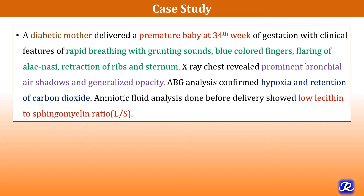A diabetic mother delivered a premature baby at 34 weeks of gestation with clinical features of rapid breathing with grunting sounds, blue colored fingers, flaring of alae nasi, and retraction of ribs and sternum. X-ray chest revealed prominent bronchial air shadows and generalized opacity. Arterial blood gas analysis confirmed hypoxia and retention of carbon dioxide. Amniotic fluid analysis done before delivery showed low lecithin to sphingomyelin ratio.